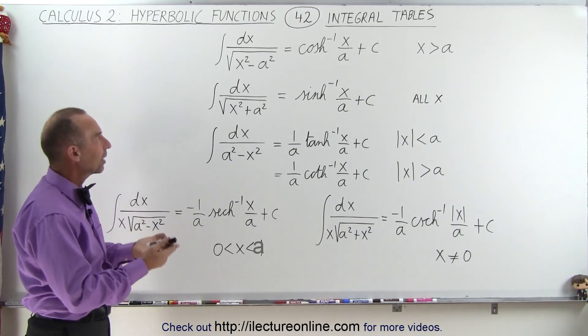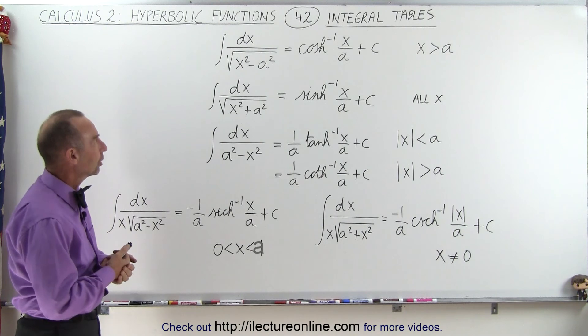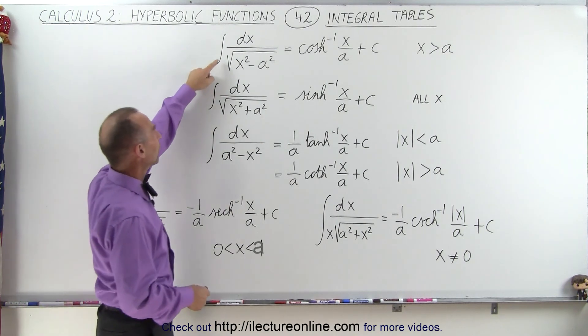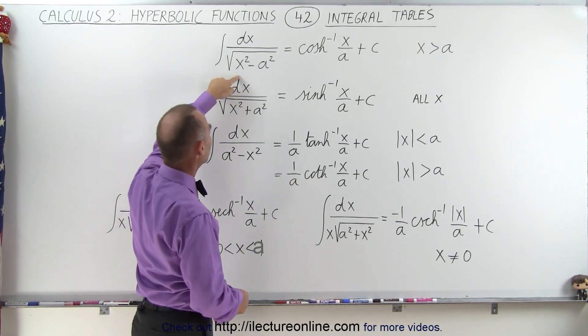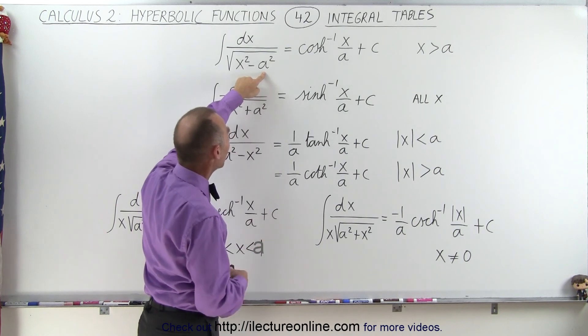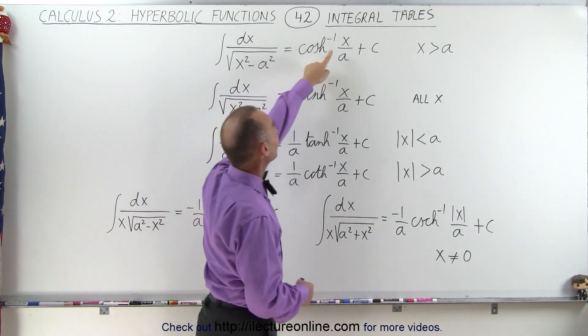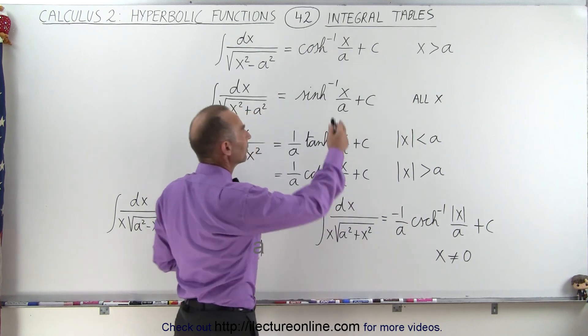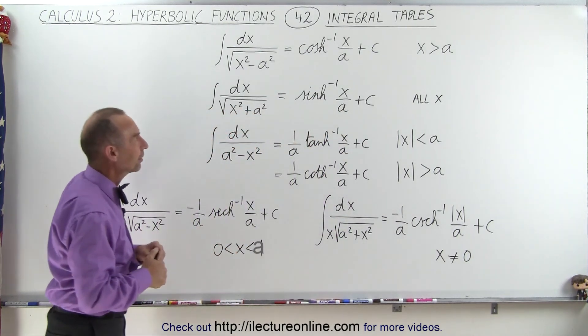So let's say that we have another constant in there other than 1, what does the solution look like? We have the integral of dx over the square root of x squared minus a squared, a being a constant, that is equal to the inverse hyperbolic cosine of x over a. The restriction is that x must be greater than a.